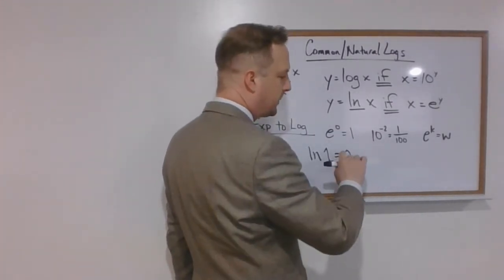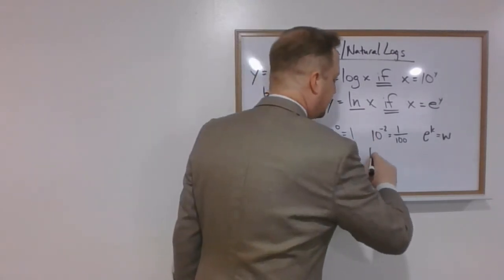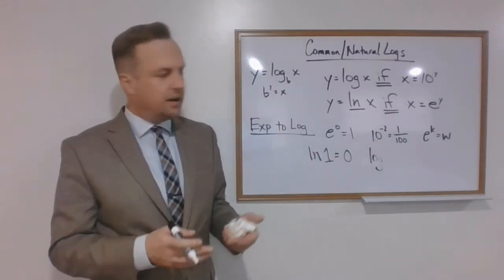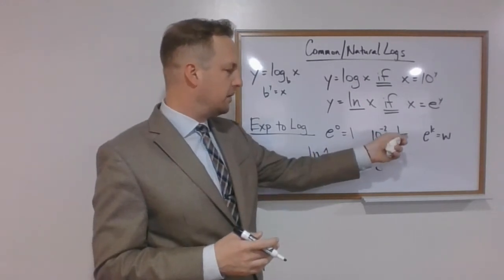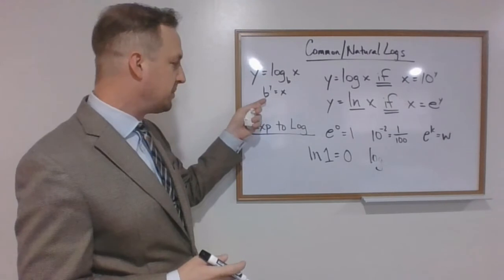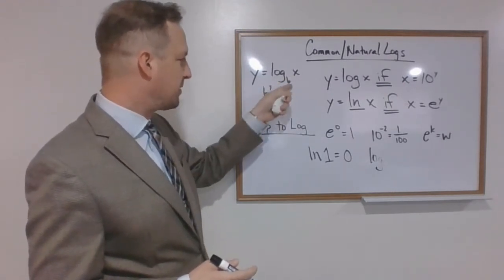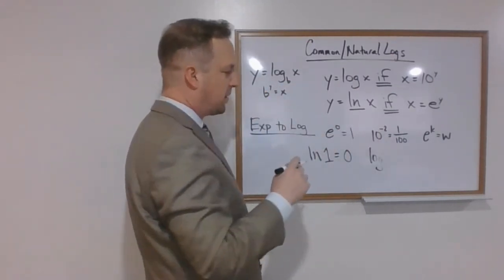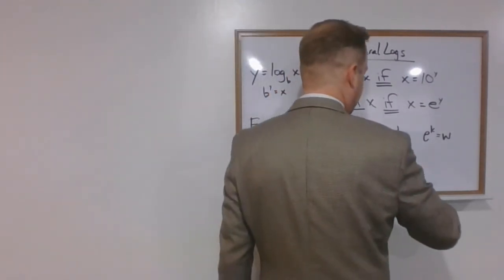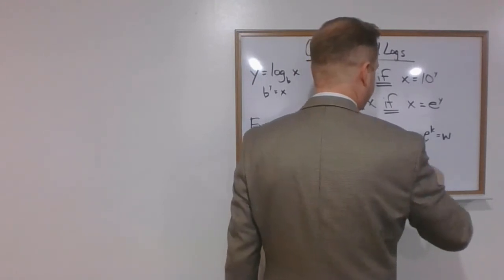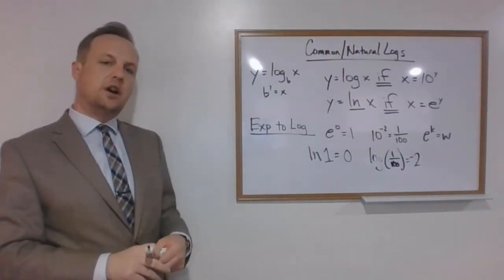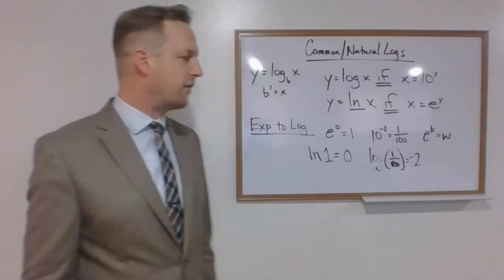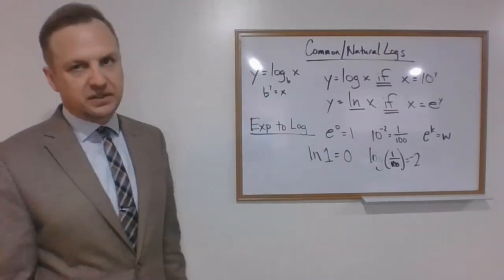What about here? Remember, now we're not going to have to worry about our base anymore because we can see our base is 10 here. So if we read this correctly, we just put everything in the proper place. Log of 1 over 100 equals negative 2. In other words, 10 to the negative 2 power equals 1 over 100. Hopefully, by this point, you ought to have a pretty good sense of what's going on here.